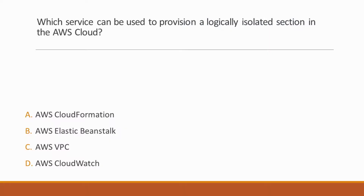First question: Which service can be used to provision a logically isolated section in the AWS Cloud? Options: A. AWS CloudFormation, B. AWS Elastic Beanstalk, C. AWS VPC, D. AWS CloudWatch. Correct answer is option C, AWS VPC, because VPCs let you provision a logically isolated section of the AWS Cloud where you can launch AWS resources.